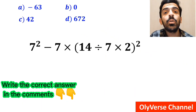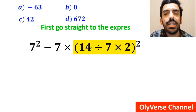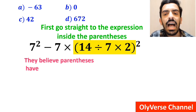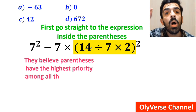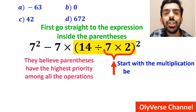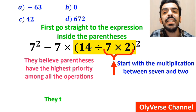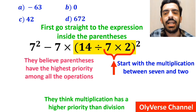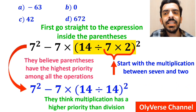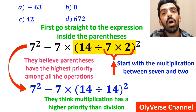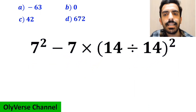Also, some other people, to solve this question, first go straight to the expression inside the parenthesis, because they believe parenthesis have the highest priority among all the operations. And they start with the multiplication between 7 and 2, because they think multiplication has a higher priority than division. So they rewrite this expression as 7 squared minus 7 multiplied by 14 divided by 14 inside the parenthesis all squared.